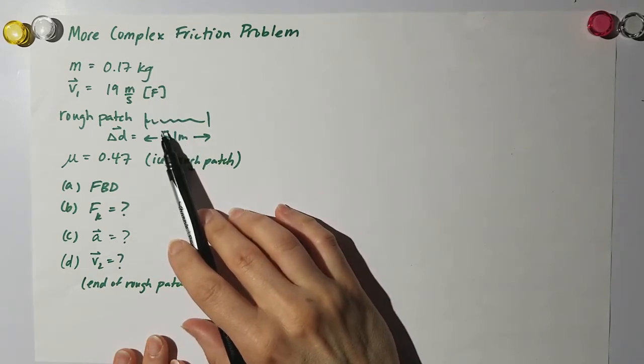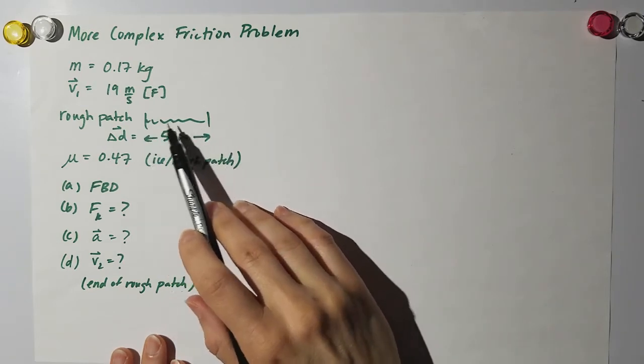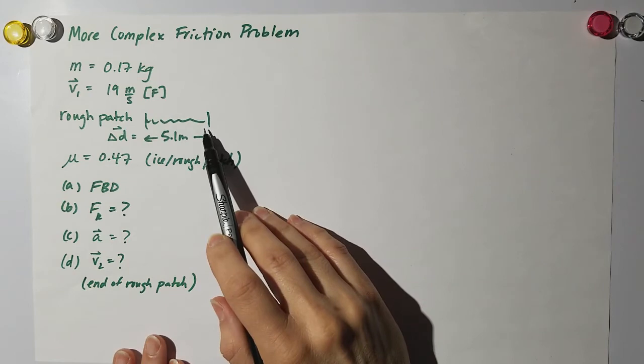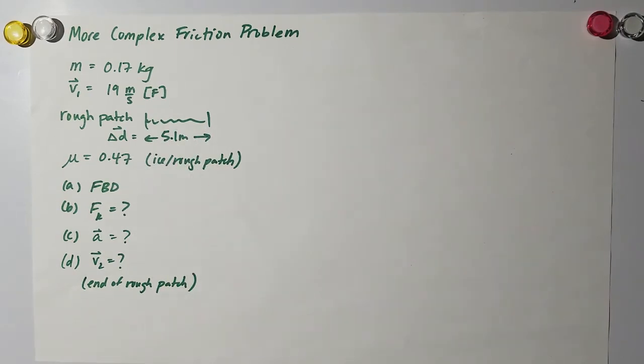We have a hockey puck with a mass of 0.17 kilograms that's initially traveling at 19 meters per second. When it runs into a rough patch of ice, this length of rough patch is 5.1 meters long, so that has to do with our displacement, and we have a coefficient of friction of 0.47 for this rough patch.